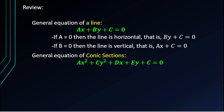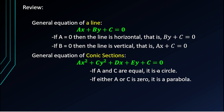The general equation of conic sections is ax² + cy² + dx + ey + c = 0. If a equals c, it is a circle. If either a or c is zero — but not both — it is a parabola, since the remaining squared term still makes it nonlinear.